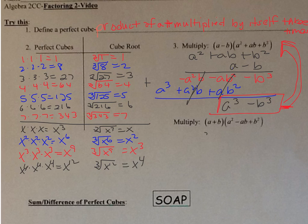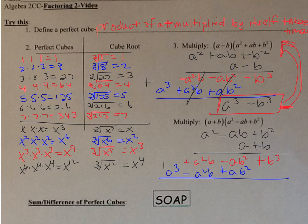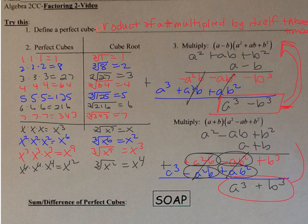Now let's do the bottom one: (a squared minus ab plus b squared) times (a plus b). b times b squared is positive b cubed, negative ab times b is negative ab squared, b times a squared is positive a squared b. Then a times b squared is positive ab squared, a times negative ab is negative a squared b, and a times a squared is a cubed. Adding up: the ab squared terms cancel, the a squared b terms cancel, and I'm left with a cubed plus b cubed — that's the sum of perfect cubes.